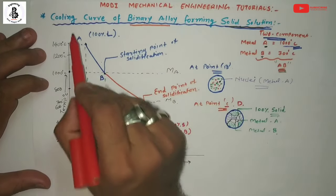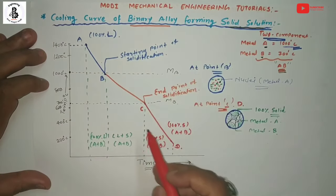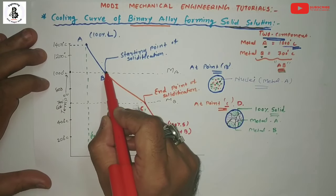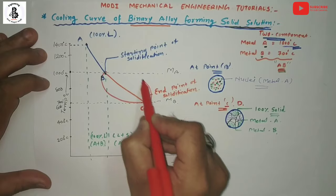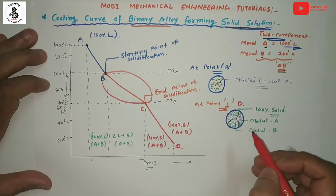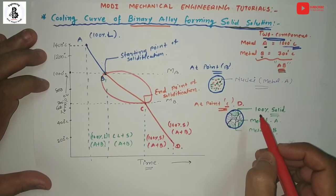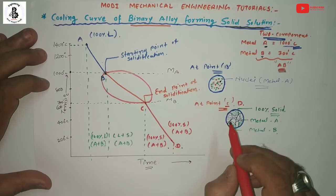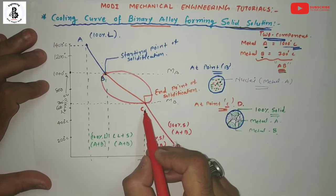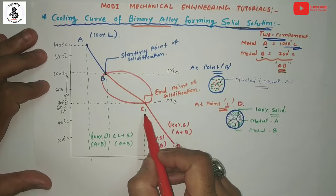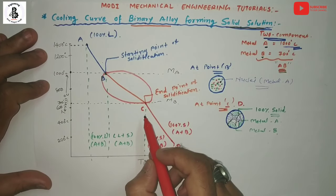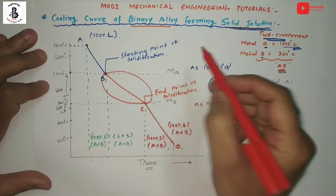In the cooling curve of the binary alloy, in the B to C region, unlike the solidification of a pure single metal which occurs at constant temperature, the B to C region is not a constant temperature process. We will now validate this cooling curve for the binary alloy using the Gibbs phase rule.